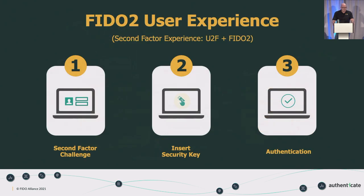This leads us to two basic scenarios you'll encounter most of the time with FIDO2. The first is FIDO as a second factor — you still have a username and password, but there's now a second step where you're asked to insert a security key, or if it's a platform authenticator it may automatically initiate a biometric request. The authentication then takes place. In this case you're still using a password, but you're using the authenticator as the second factor — the 'what you have' aspect.